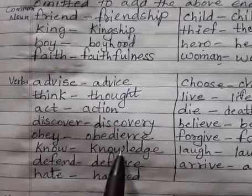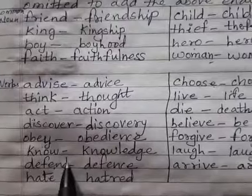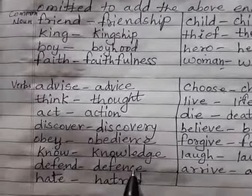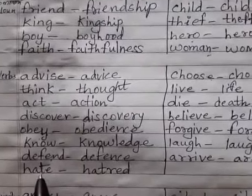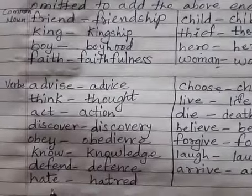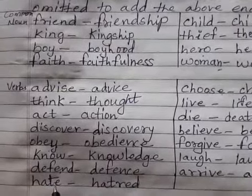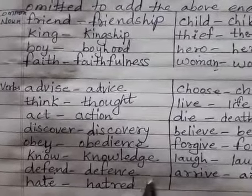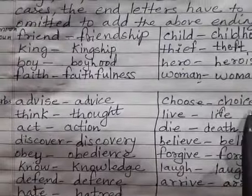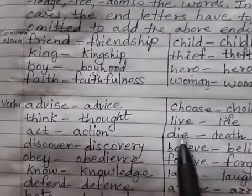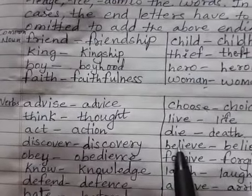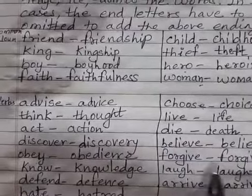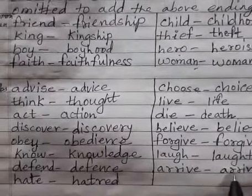Know → knowledge (adding -ledge). Defend → defence (omitting D, adding -ce). Hate → hatred (omitting E, adding -red). Choose → choice. Live → life. Die → death. Believe → belief. Forgive → forgiveness. Laugh → laughter. Arrive → arrival. These are all verbs converted into abstract nouns.